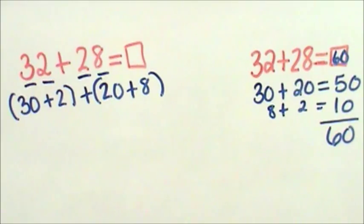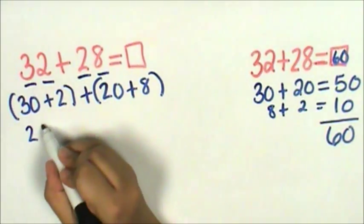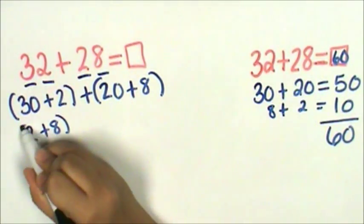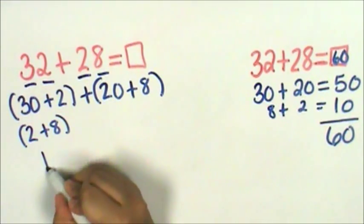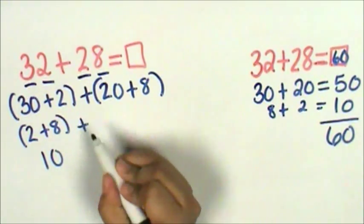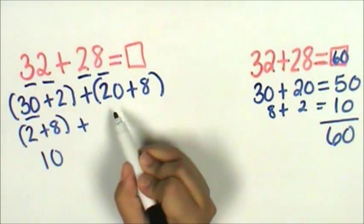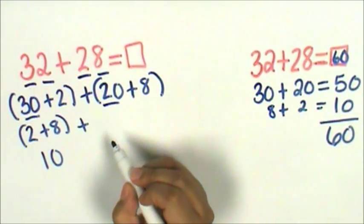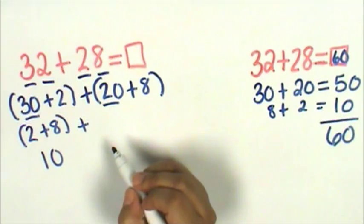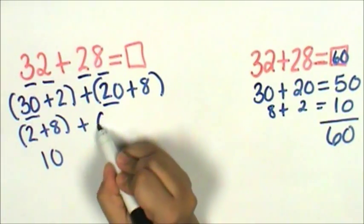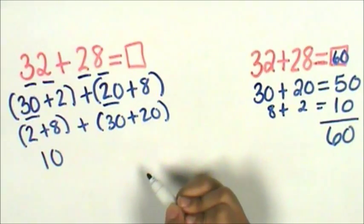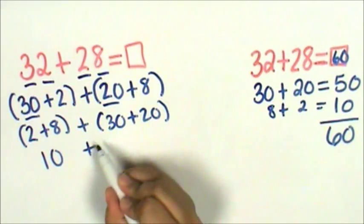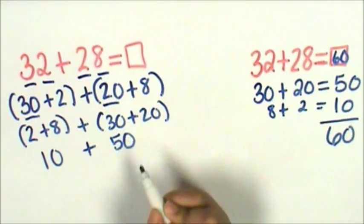I'm going to join two ones and eight ones because I know that's ten. Then I'm going to join thirty and twenty because all I have to do is skip count by ten. Thirty, forty, fifty. Thirty plus twenty is fifty.